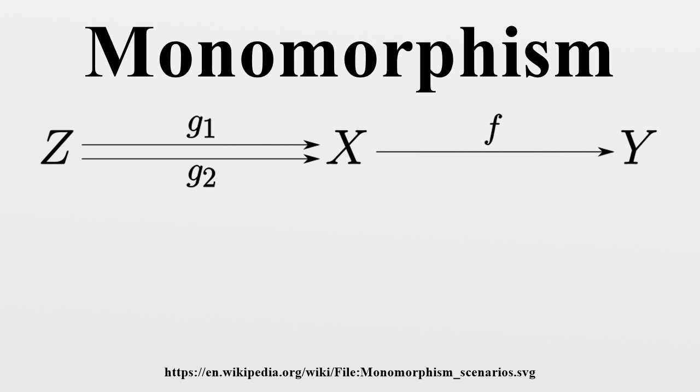The categorical dual of a monomorphism is an epimorphism, i.e., a monomorphism in a category C is an epimorphism in the dual category C-op. Every section is a monomorphism, and every retraction is an epimorphism.